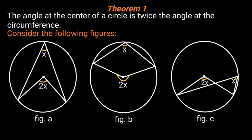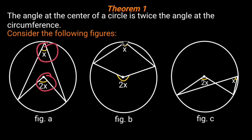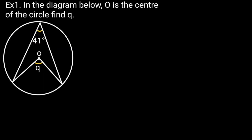Theorem 1: The angle at the center of a circle is twice the angle at the circumference. Consider the following three figures. For figure A, this is the angle at the circumference that is twice the angle at the center. For figure B and figure C, similarly, the angle at the circumference is twice the angle at the center.